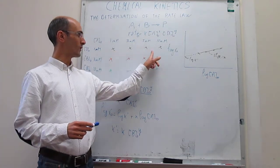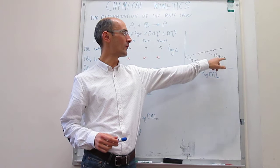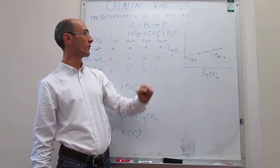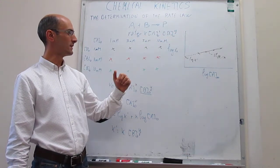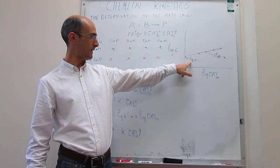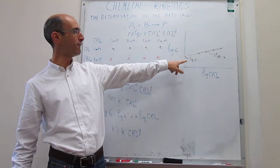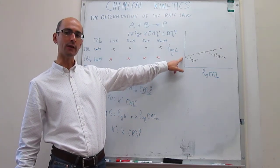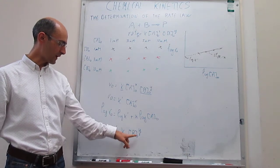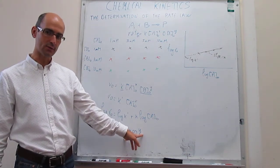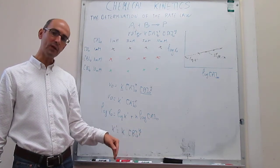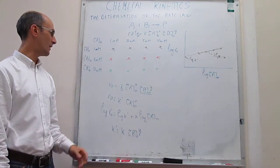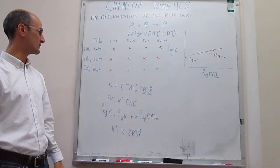Using this first set of experiments, we can determine the reaction order with respect to A. However, we still have two unknown variables: the reaction order with respect to B (Y) and the rate constant K. Both are folded into K prime, and so far we only have one value of K prime — two unknowns and one equation cannot be solved. To determine K and Y, we need at least another set of measurements, so we calculate a second set of experiments in which we vary the initial concentration of B.